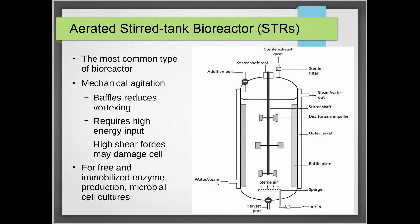For a very large system, you have a higher energy input. And because mixing uses impellers — paddles — it produces the highest shear forces among all bioreactor configurations. That is why you do not use aerated stirred tank bioreactors when dealing with eukaryotic cells, because eukaryotic cells will be killed due to the high shear forces.